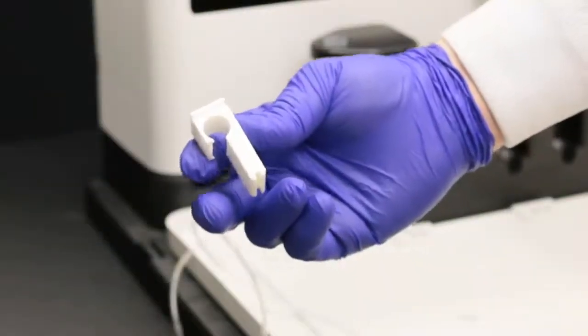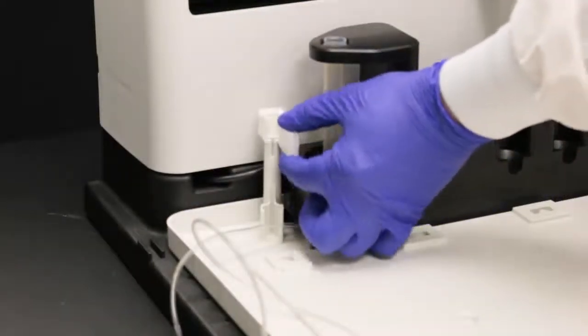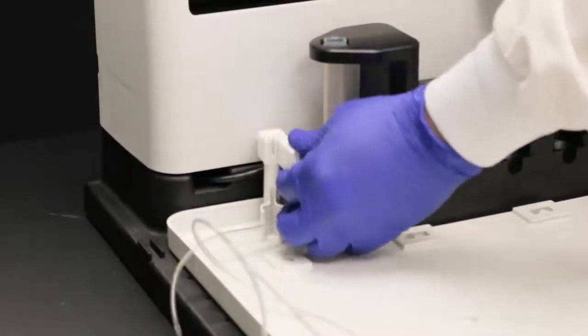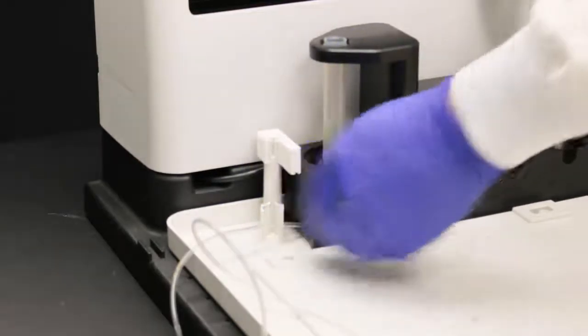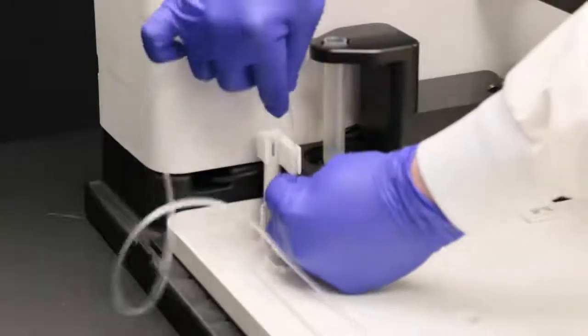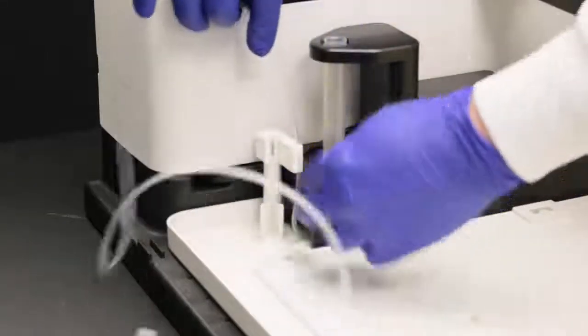Press the tubing holder straight down onto the rinse station support post. Press the vortex vessel tubing into the grooves in the tubing holder. Allow enough slack so the tubing is not stretched or kinked.